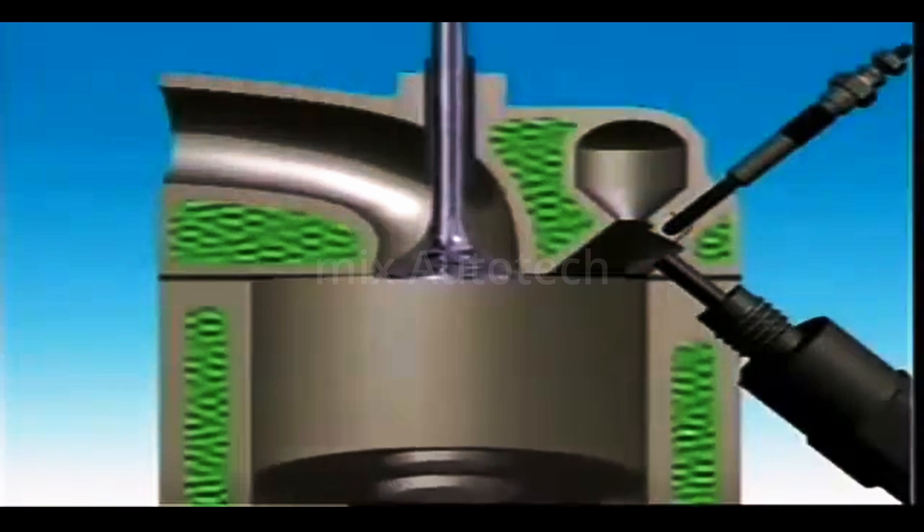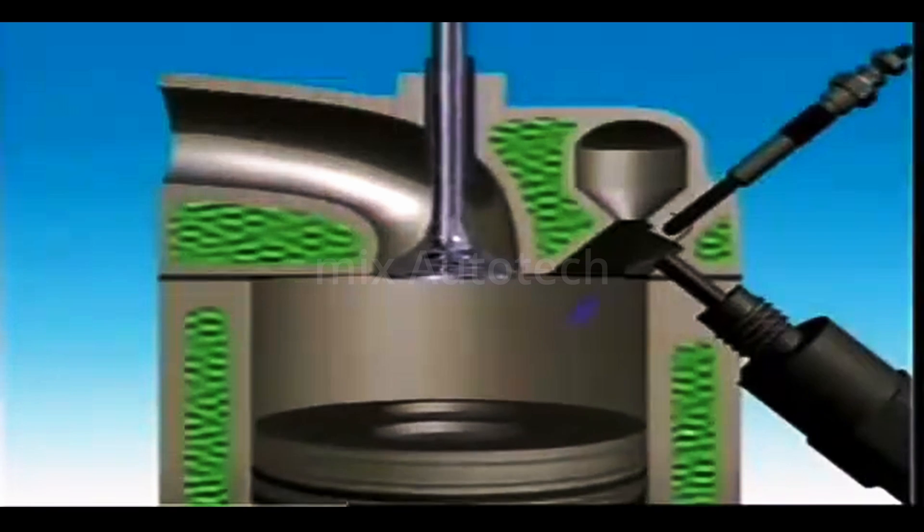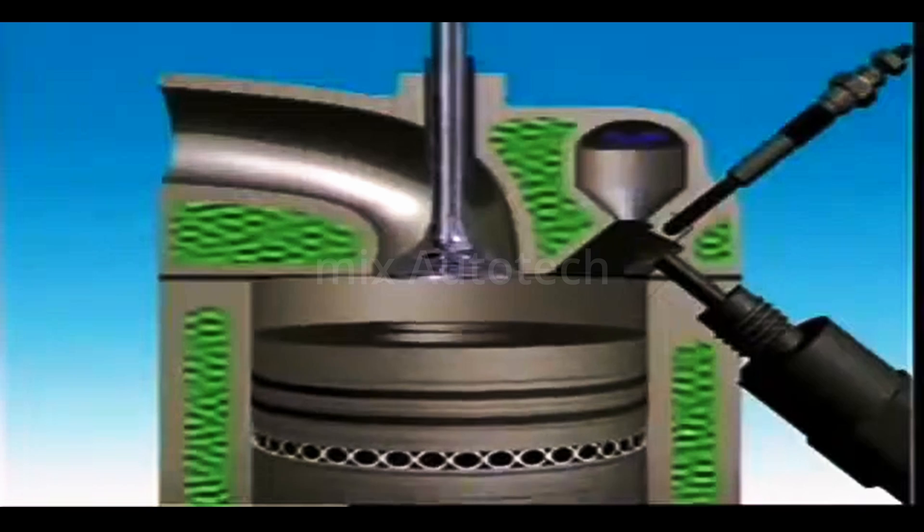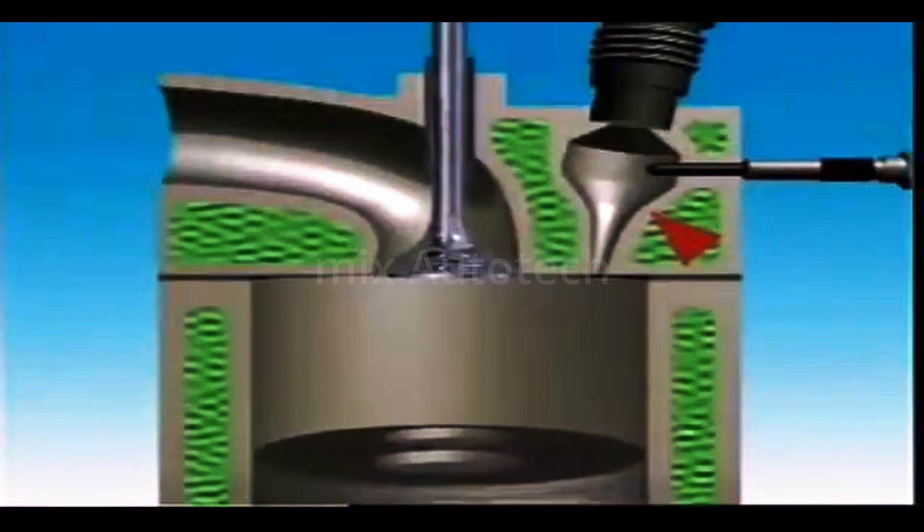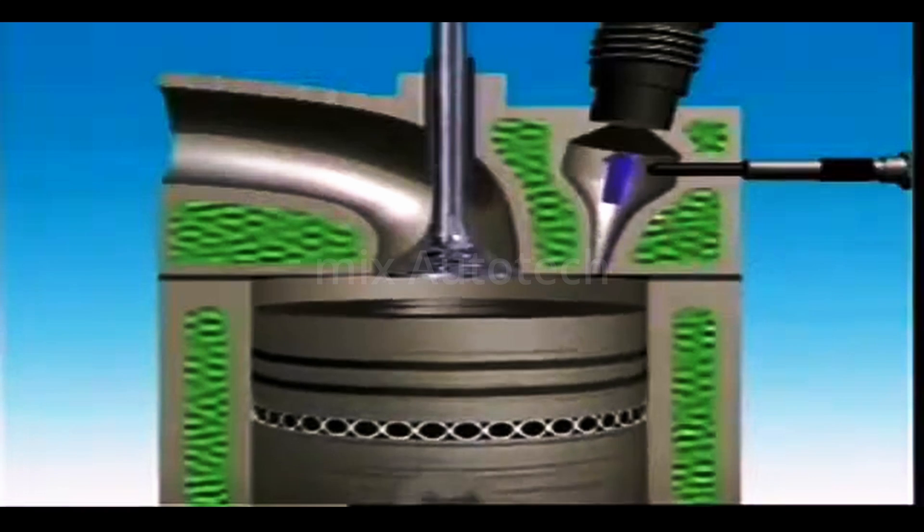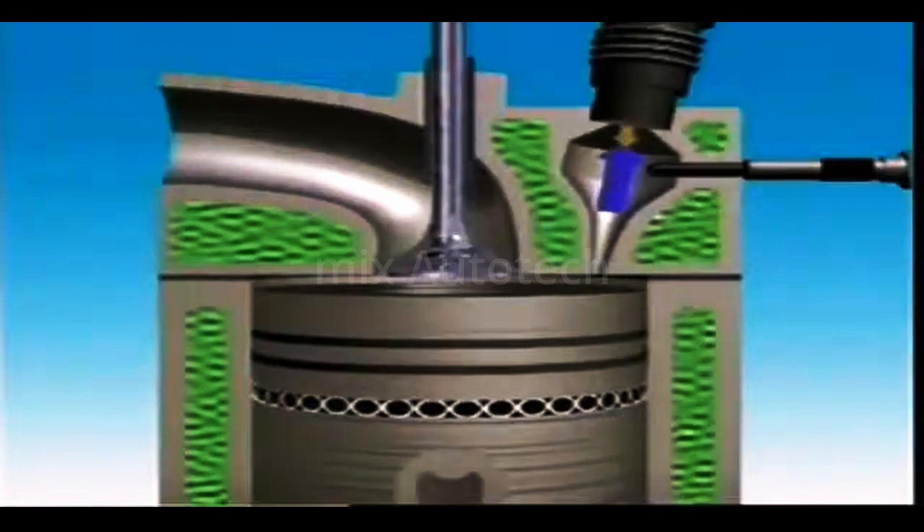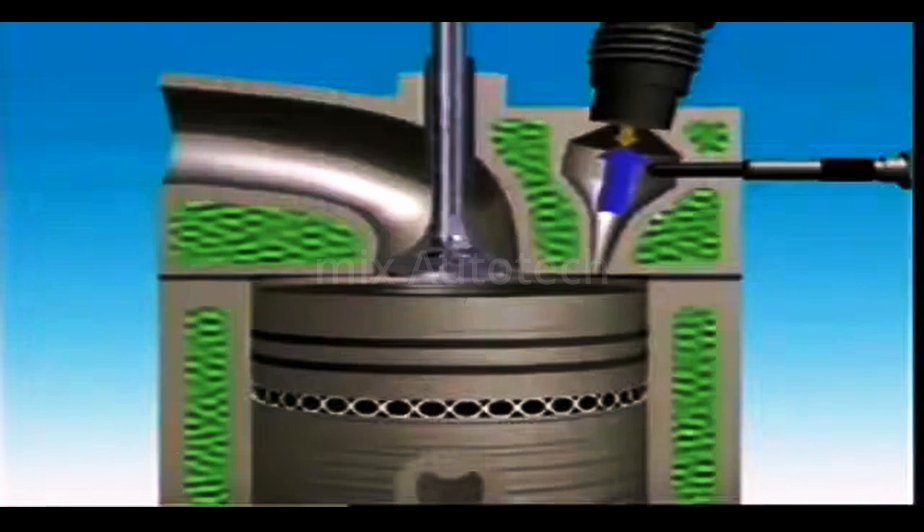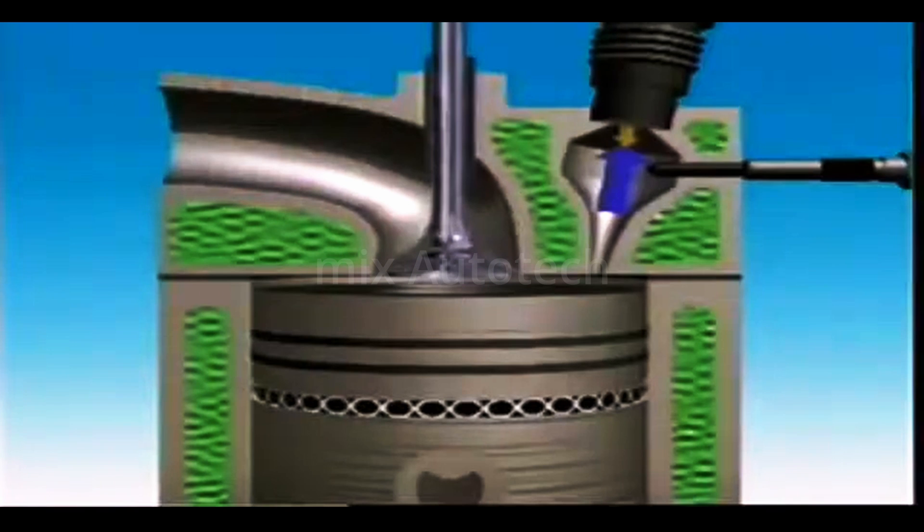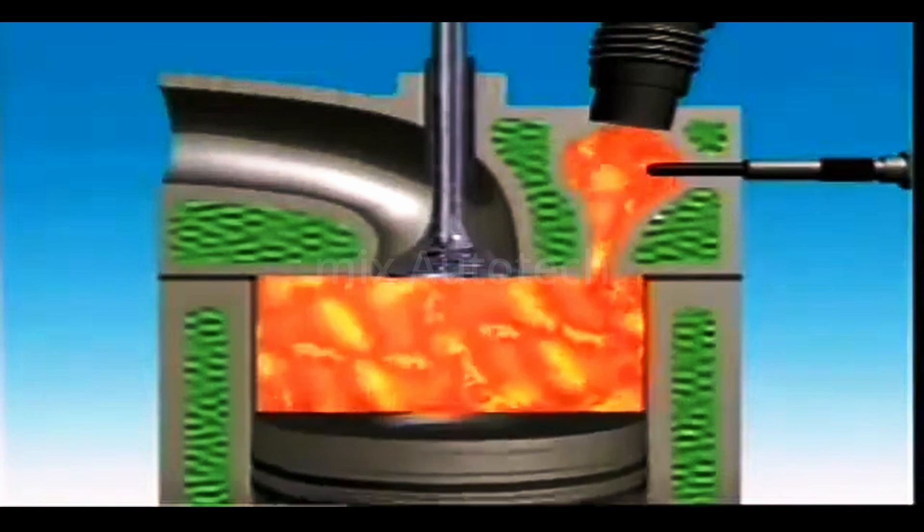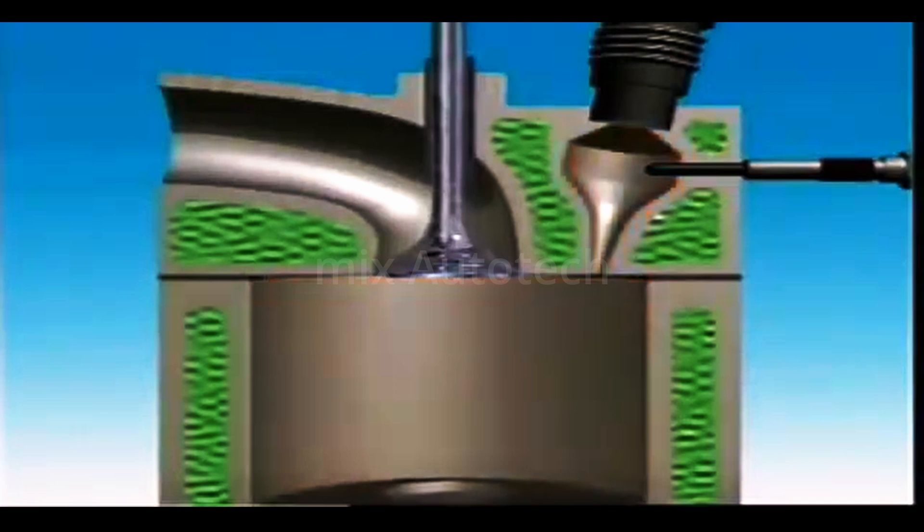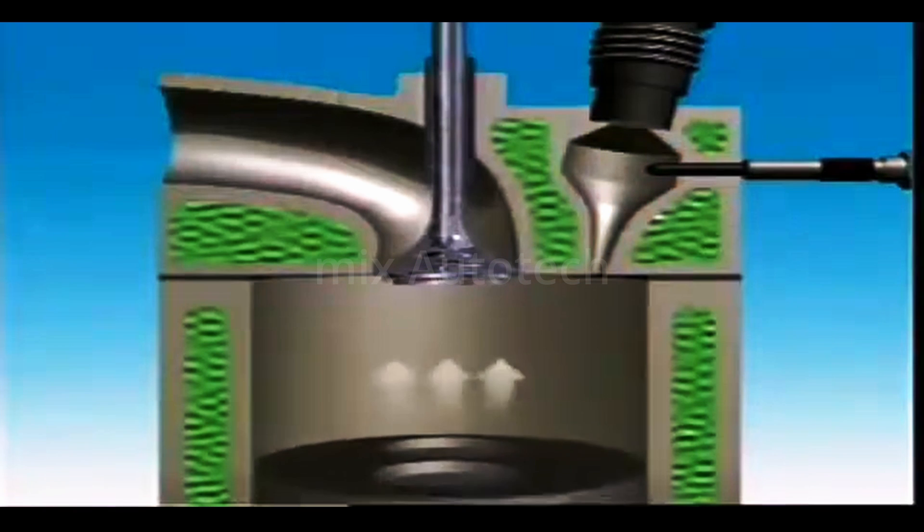This pre-combustion chamber is screwed into the cylinder head. The injector is mounted in the upper end. Injection occurs near the top of the compression stroke. Only part of the fuel is burned in the pre-combustion chamber. The high rise in pressure forces burning fuel into the main chamber. This happens very rapidly, which helps make more efficient combustion.